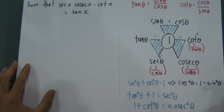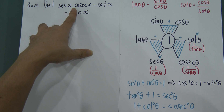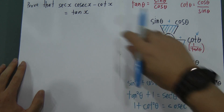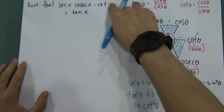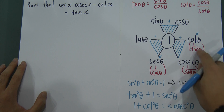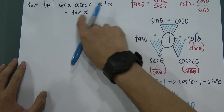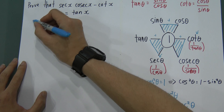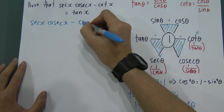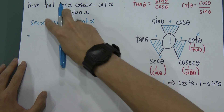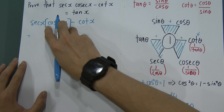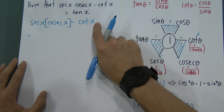Now let's look at the last example. It says: prove that sec x · cosec x − cot x = tan x. For this one, there are no squares. When there are no squares, you have to try using the basic reciprocal formulas to solve it. My objective is to get tan x. I write: sec x · cosec x − cot x. When there is nothing between two terms, it means multiplication — so sec x multiplies cosec x, then minus cot x.